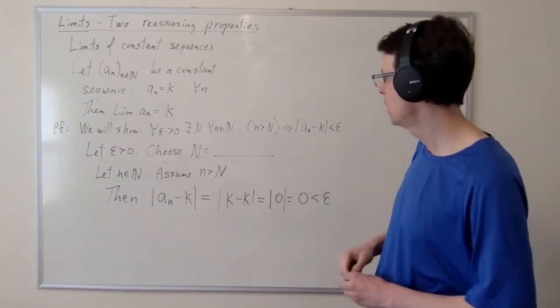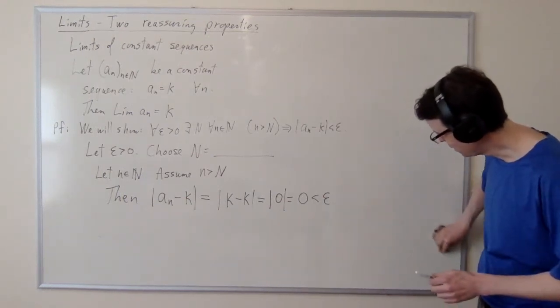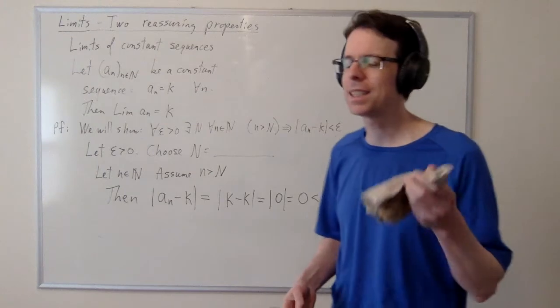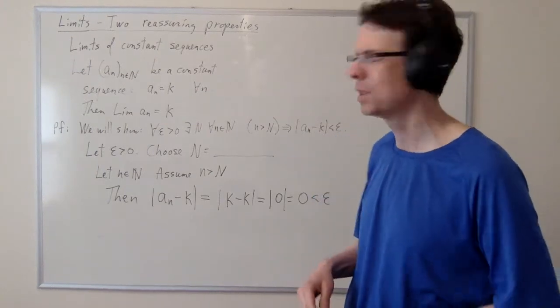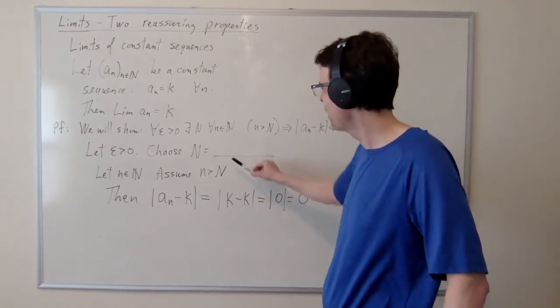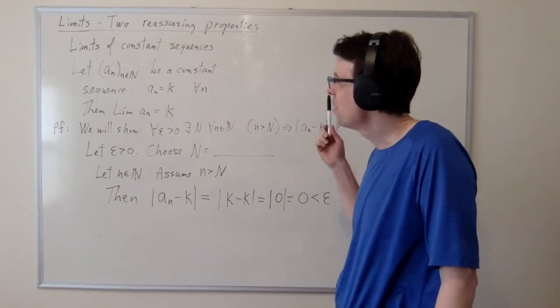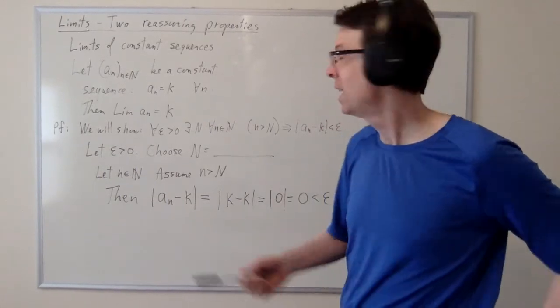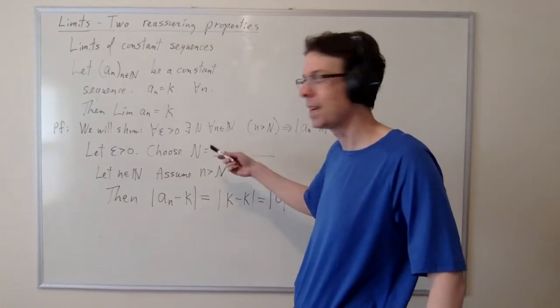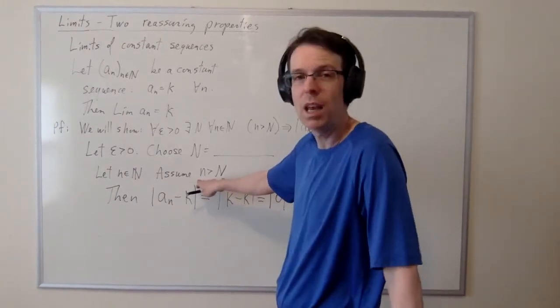The only thing wrong with this proof, and it's really confusing to early students in analysis, is that I still have this blank space. And like, what am I supposed to do here? I never actually chose the value of N. For this proof to be correct, it has to assert like some sort of choice of cap N so that this assumption is meaningful. Like I'm trying to show there exists a cap N.